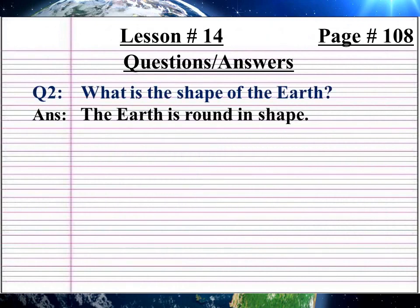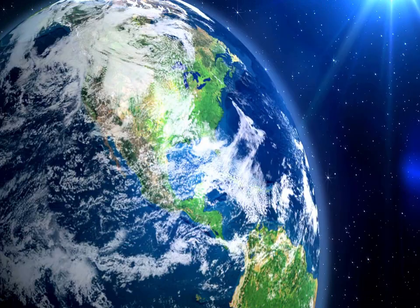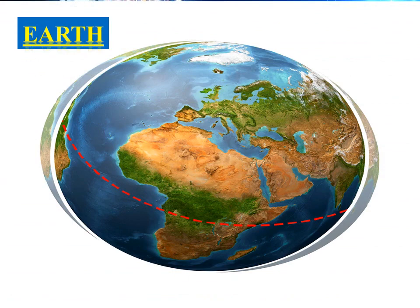Question 2: What is the shape of the Earth? (Urdu: Zamine ki shakl kya hai?) Answer: The Earth is round in shape. (Urdu: Zamine shakl mein gol hoti hai.) Look at the picture: Earth.